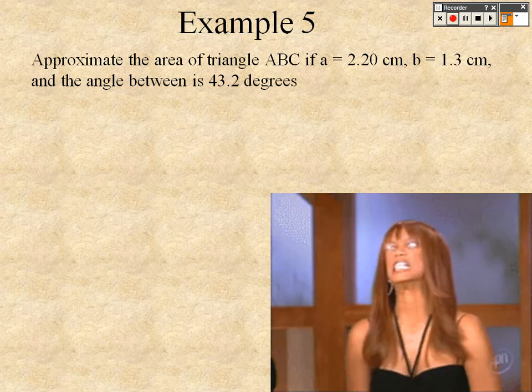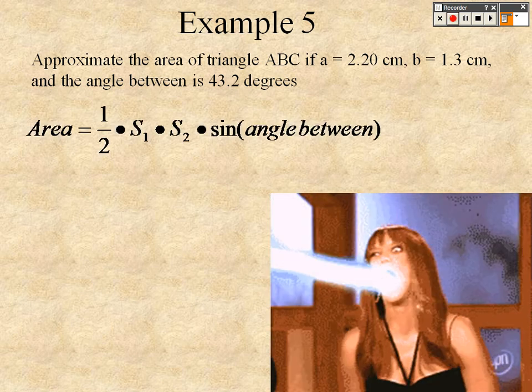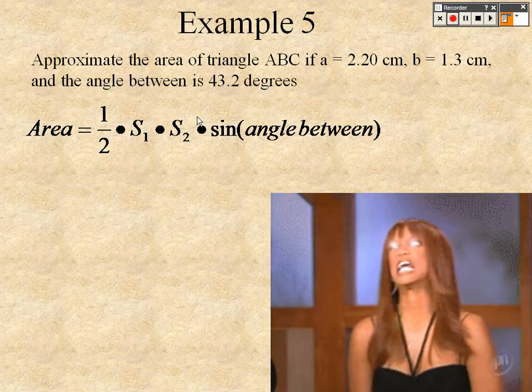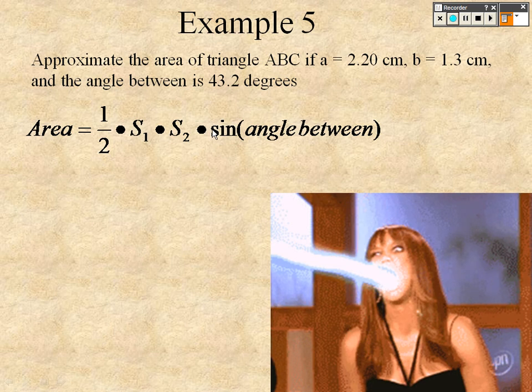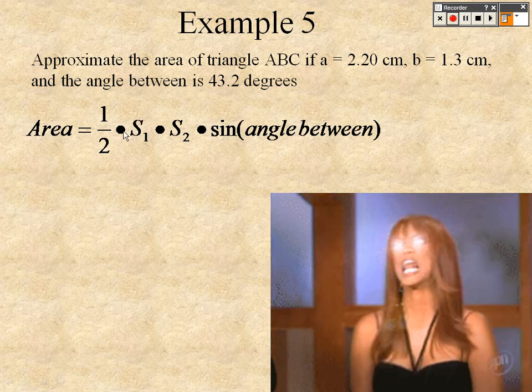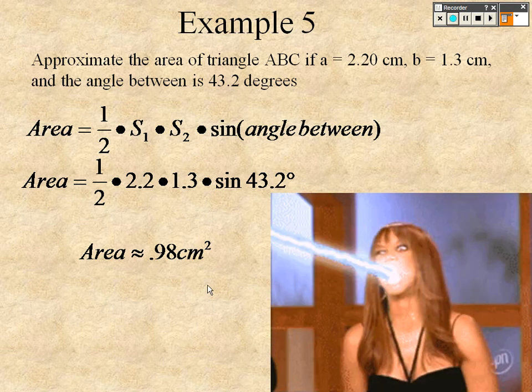Approximate the area of triangle ABC if A is 2.2, B is 1.3, and the angle between is 43.2 degrees. So it's 2.2 times 1.3 times sine of 43.2 times a half, and you end up getting about 0.98 centimeters squared.